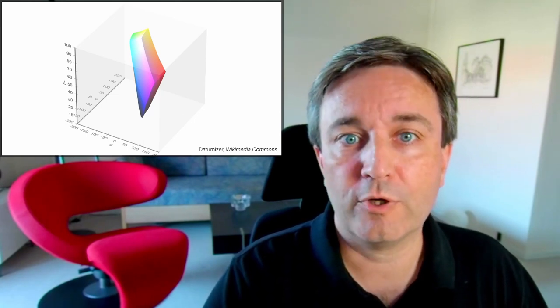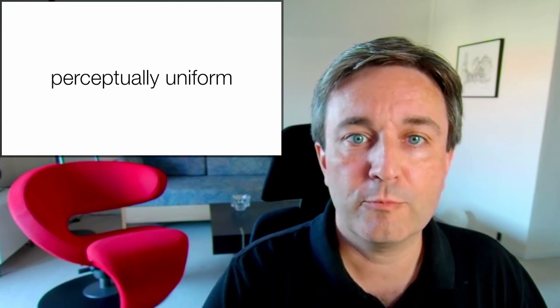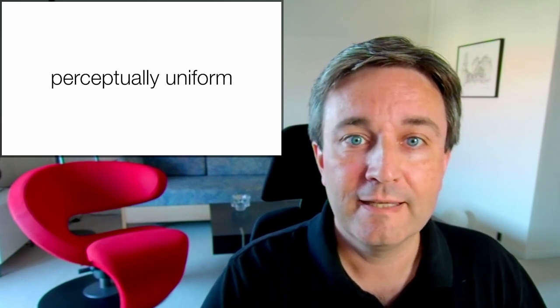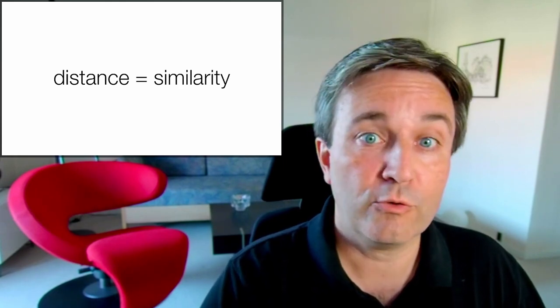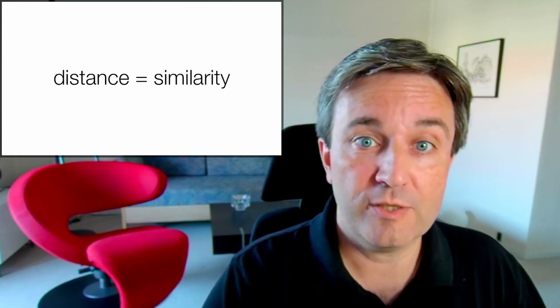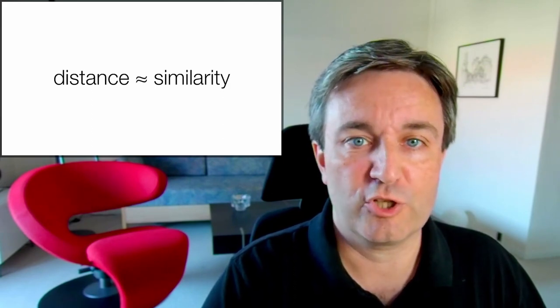Another important property of CLAB color space is that it is perceptually uniform. That means Euclidean distances within these coordinates correspond closely to similarity of the colors, at least approximately.